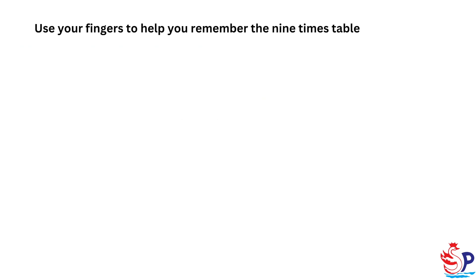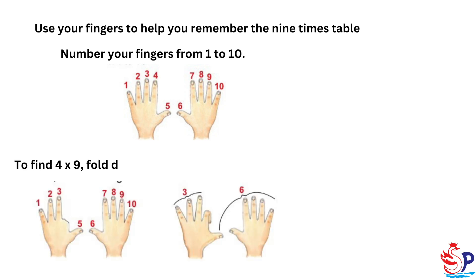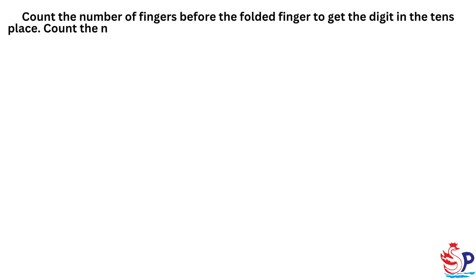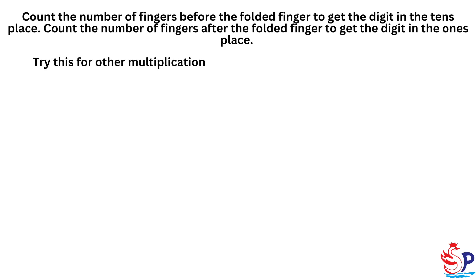Use your fingers to help you remember the 9 times table. Number your fingers from 1 to 10. To find 4 times 9, fold down finger number 4. 4 times 9 equals 36. Count the number of fingers before the folded finger to get the digit in the tens place. Count the number of fingers after the folded finger to get the digit in the ones place. Try this for other multiplication facts of 9.